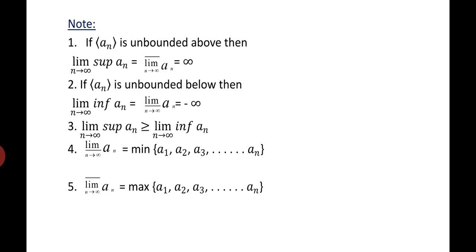Furthermore, limit inferior of a_n is the minimum of a_1, a_2, a_3, and so on, while limit superior of a_n equals the maximum value of a_1, a_2, a_3, and so on.